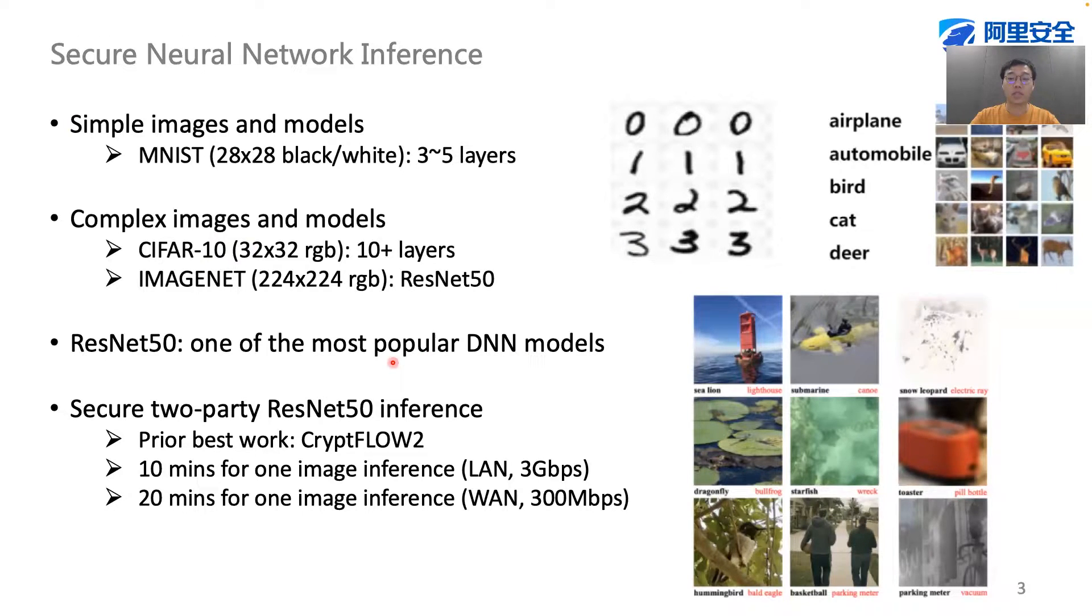The prior best work to perform secure two-party inference on ResNet-50 model is CryptoFlow2, published in CCS two years ago. The performance in their work is about 10 minutes for one image inference in a LAN setting, but this goes up to 20 minutes in a worse network environment. We are going to investigate whether we can do better and boost performance to the next level.